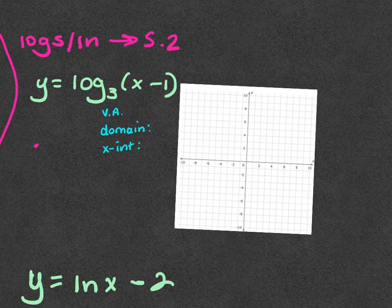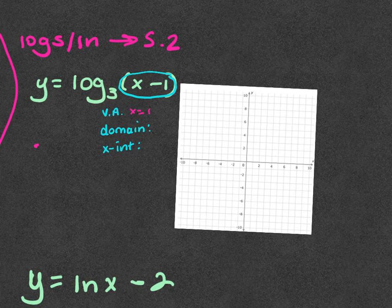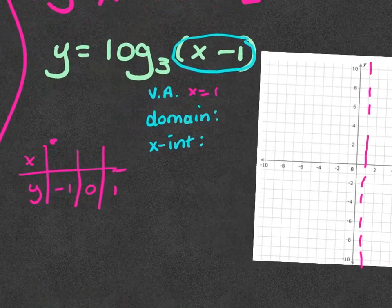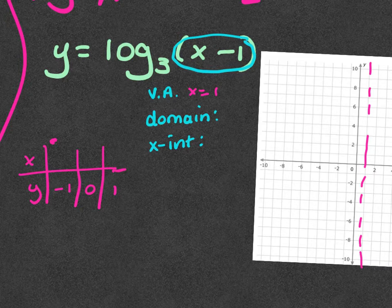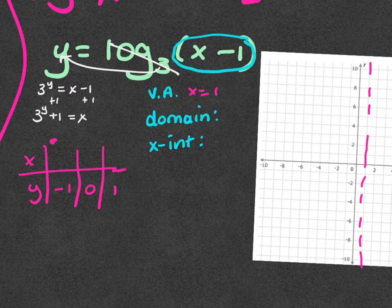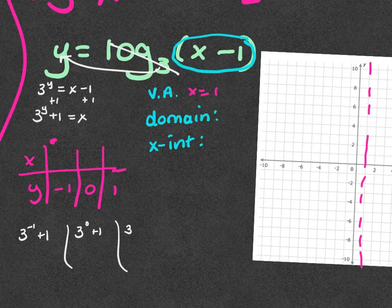We figure out where the vertical asymptote is based on what's inside the parentheses next to the log. So for log base 3 of (x minus 1), the vertical asymptote is at x equals 1. With logs we plug in for y after we convert to exponential. The 3 comes over and picks up the y, we drop the log and get x minus 1, then solve for x by adding 1: 3 to the y plus 1 equals x. So I plug in y = negative one, zero, and one.